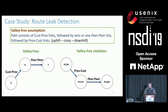Moreto validated a widely adopted rule called the valley-free assumption. The valley-free assumption says that a BGP path should consist of zero or more provider-to-customer links, followed by zero or one peer-to-peer link, followed by zero or more provider-to-customer links. You can think of a customer-to-provider link as an uphill, a peer-to-peer link as a cross, and a provider-to-customer link as a downhill. So the shape of a valley-free path should look like going uphill, then going across at most one cross, then going downhill.